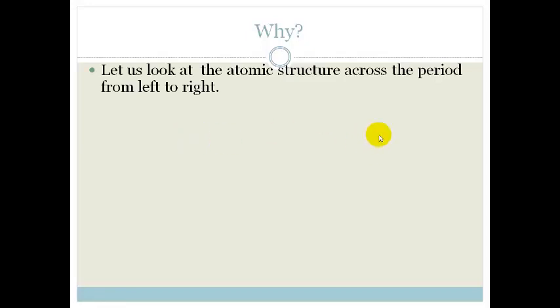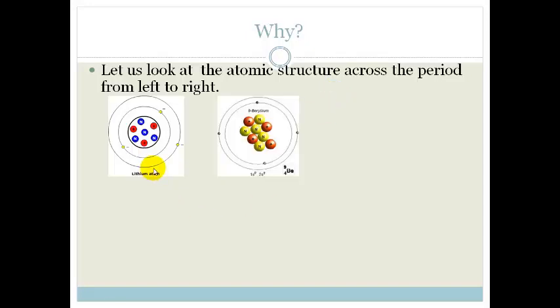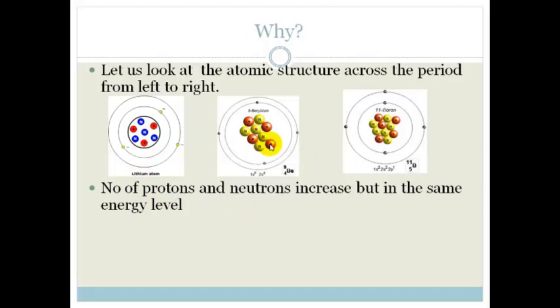But why is that? In order to understand this we need to look at the atomic structure across the period from left to right. So first we've got lithium, then we've got beryllium and then we've got boron. Now if you look at this you can see that here we've only got 3 protons and we've got 4 neutrons. Over here we've got 4 protons and a lot more neutrons. And here we've got 5 protons and lots of neutrons. So do you see that the nucleus of this is increasing in size even though we're in the same energy level? So the number of protons and neutrons increase.